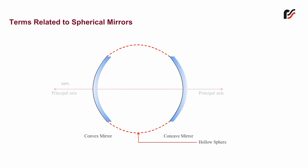b. Principal axis. The straight line which joins the pole and the center of curvature is the principal axis.